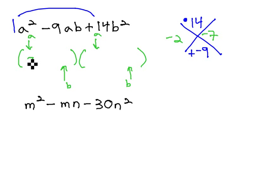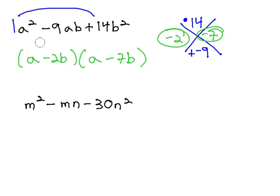So we end up with a minus 2, and we stick the b in there. That gives us our b term. And a minus 7, and we stick a b in there. Notice this is exactly the same process we used to factor before. The only difference now is the second variable appears on both of the second terms.